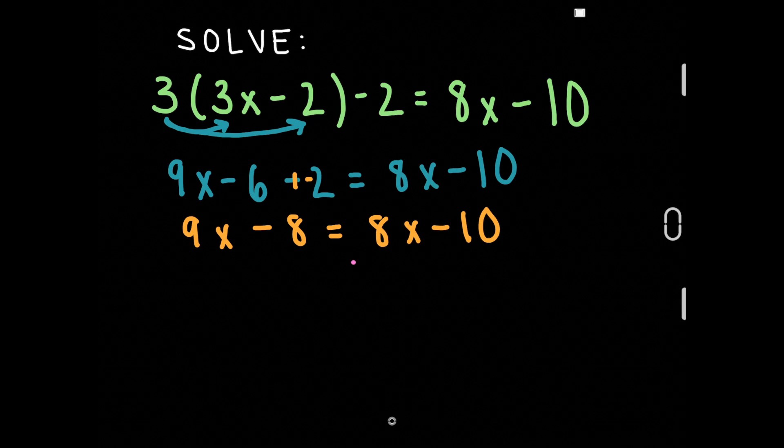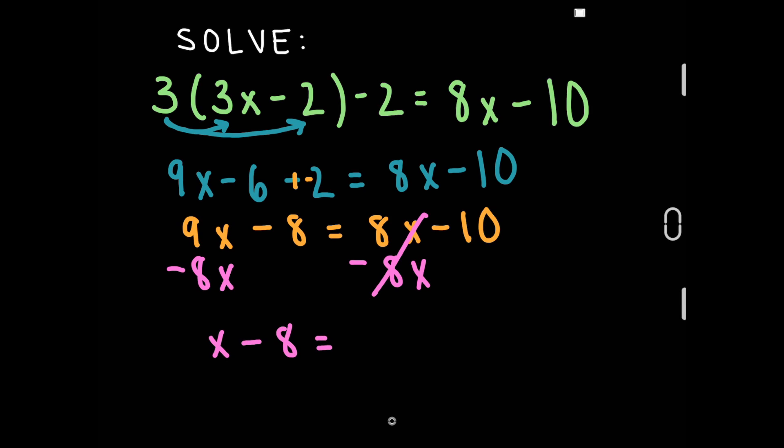From here, let's subtract 8x from both sides to get one variable on one side. 9x minus 8x is just x. So now our equation is x minus 8 equals negative 10.